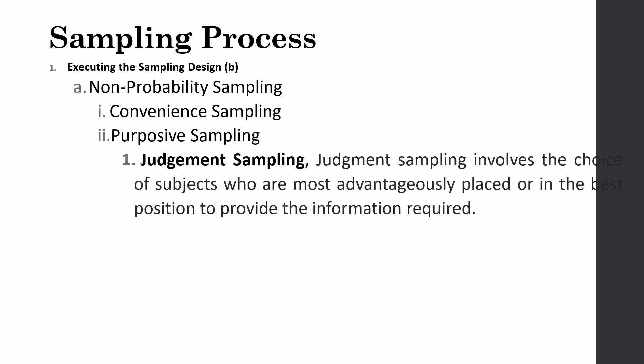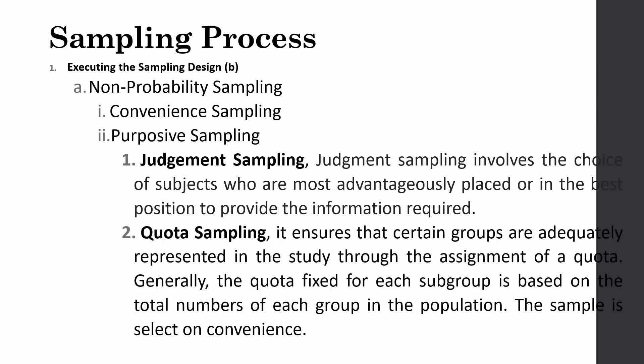The next one is purposive sampling. In purposive sampling the first one is judgment sampling. So judgment sampling involves the choice of subjects who are most advantageously placed or in the best position to provide information required. Let's say I want to study why or how women can make it to the top of the organization. So obviously I will go for women who have made it to the top of their organization, not for something that is convenient to me. Because they won't be able to answer. So it's not always the case that when you are doing non-probability sampling, you will go for convenience sampling.